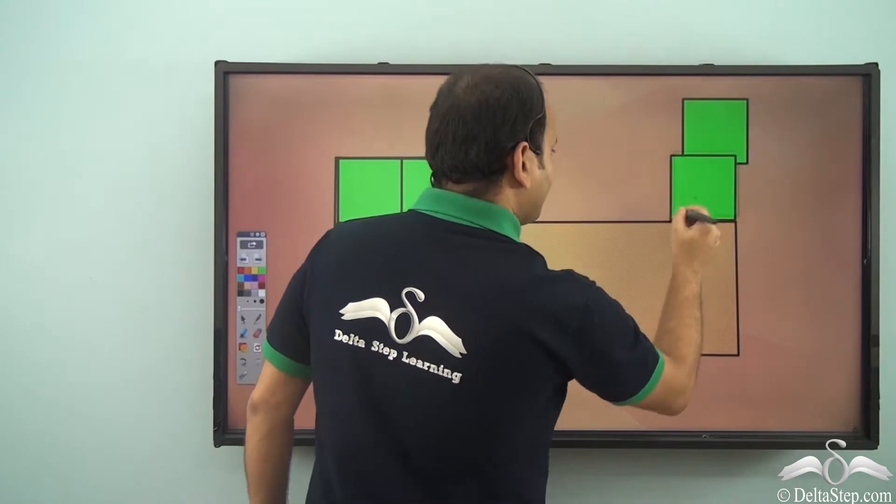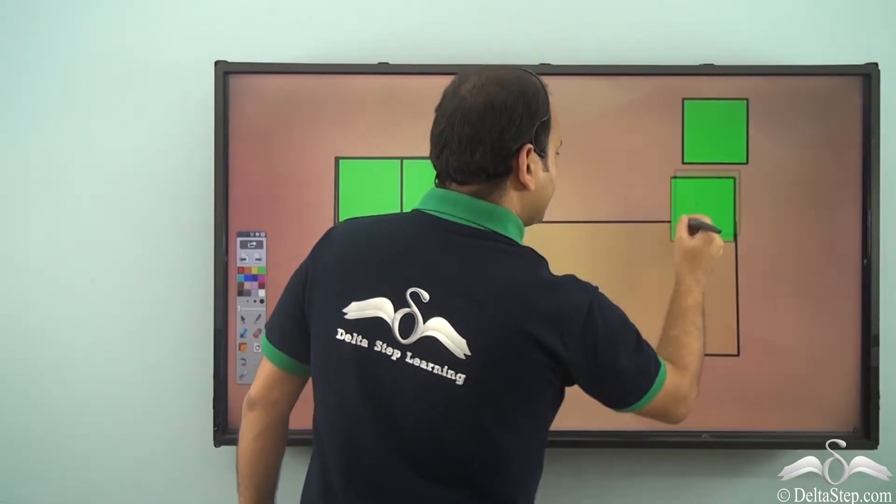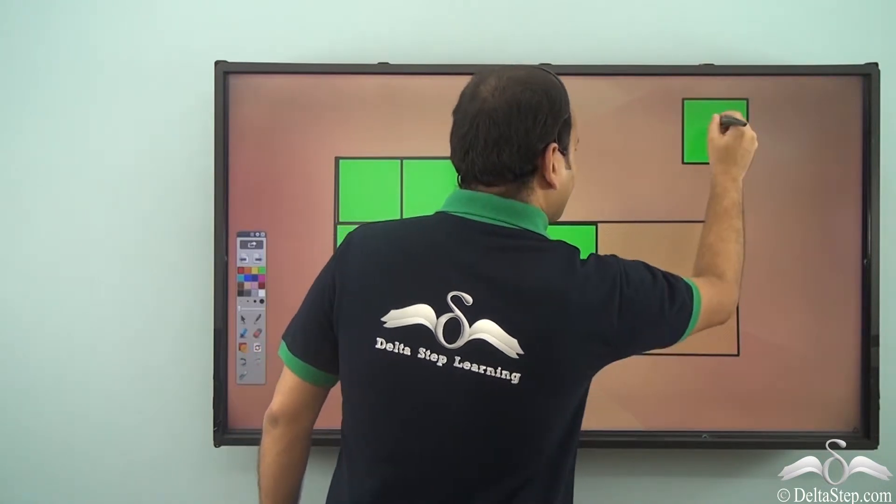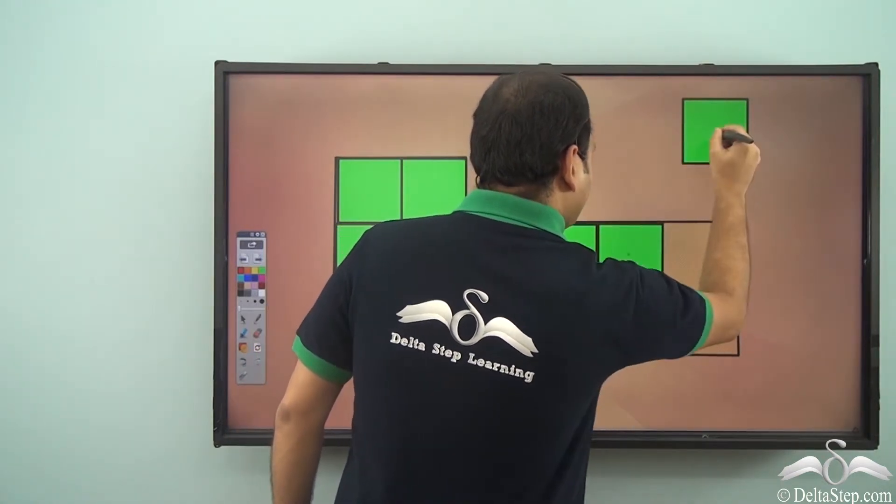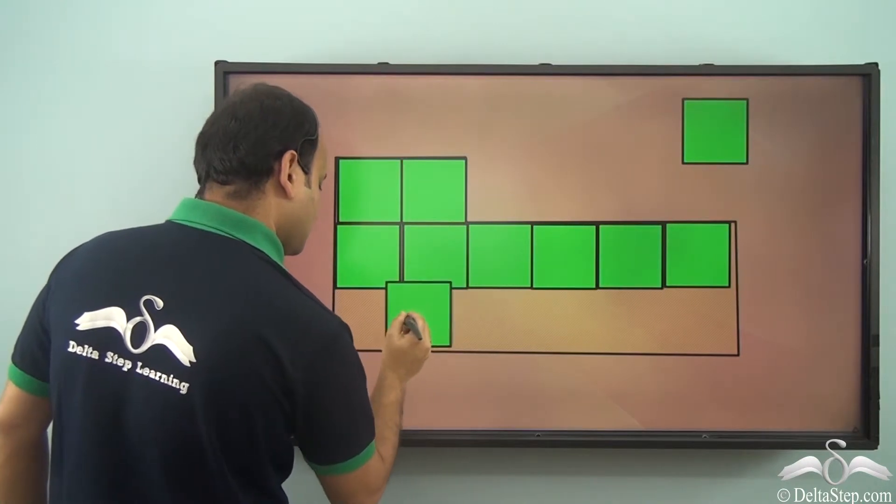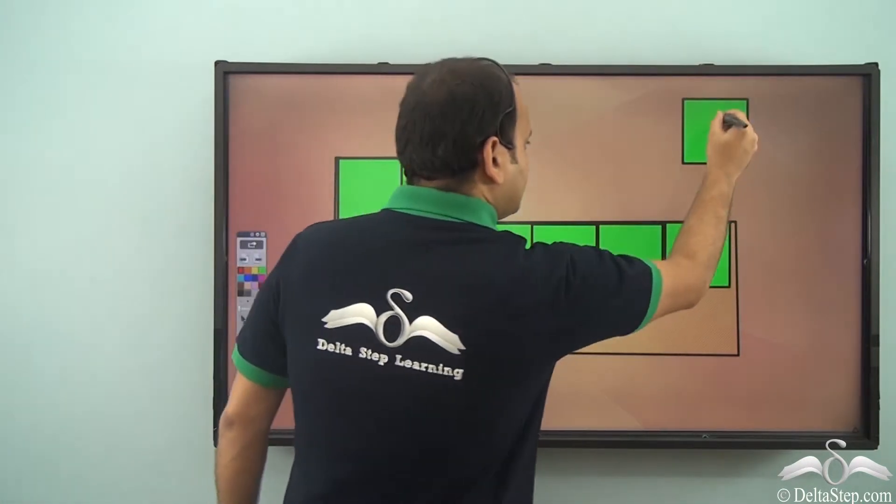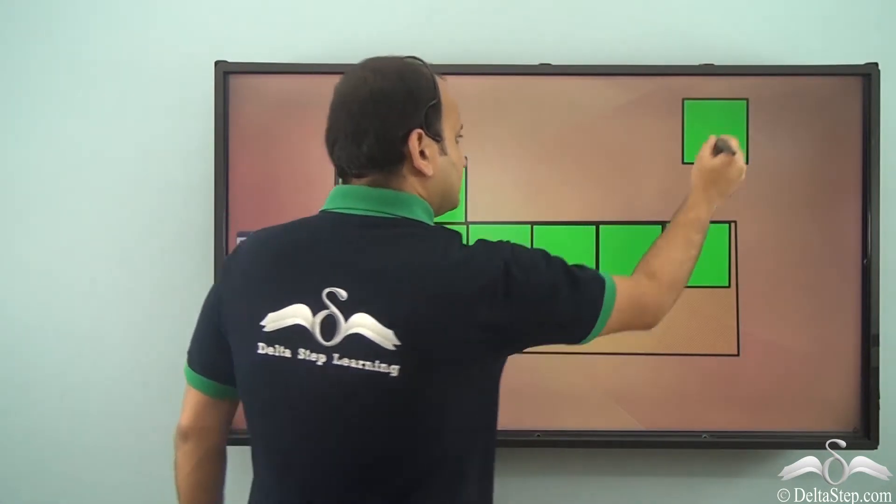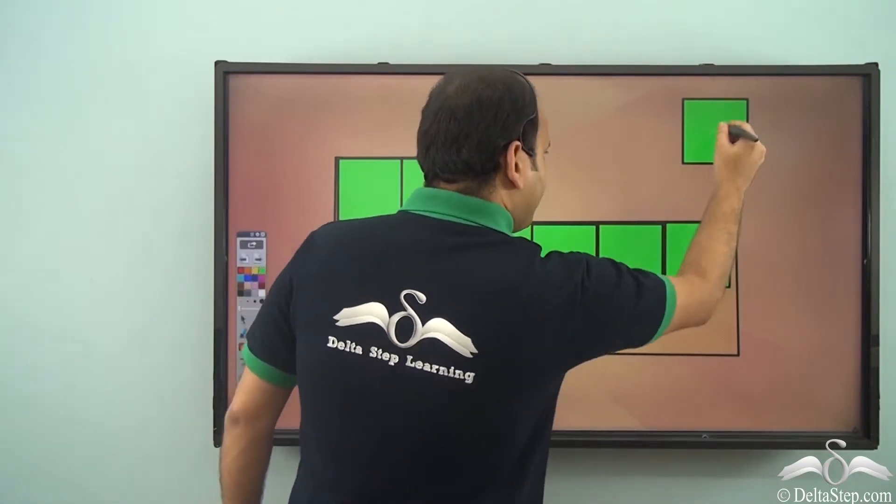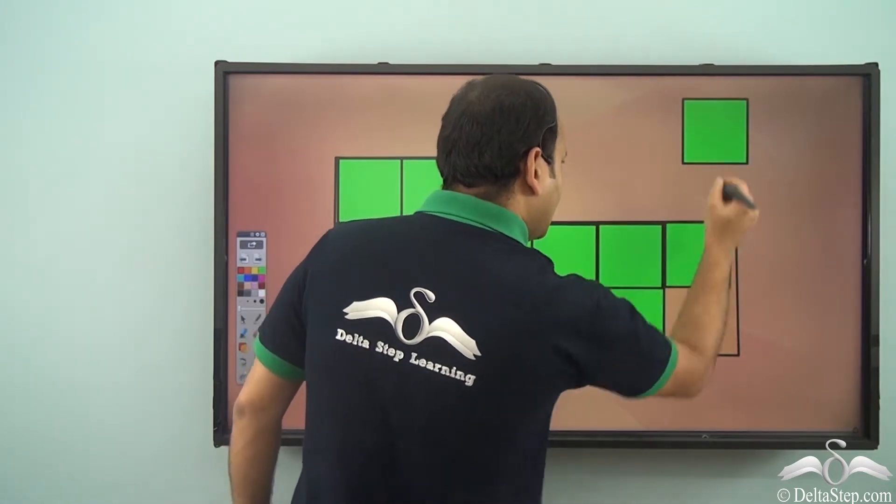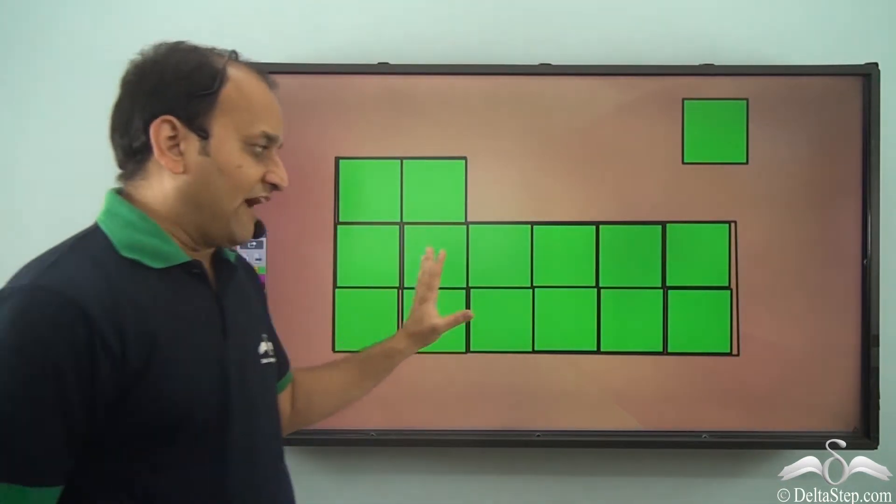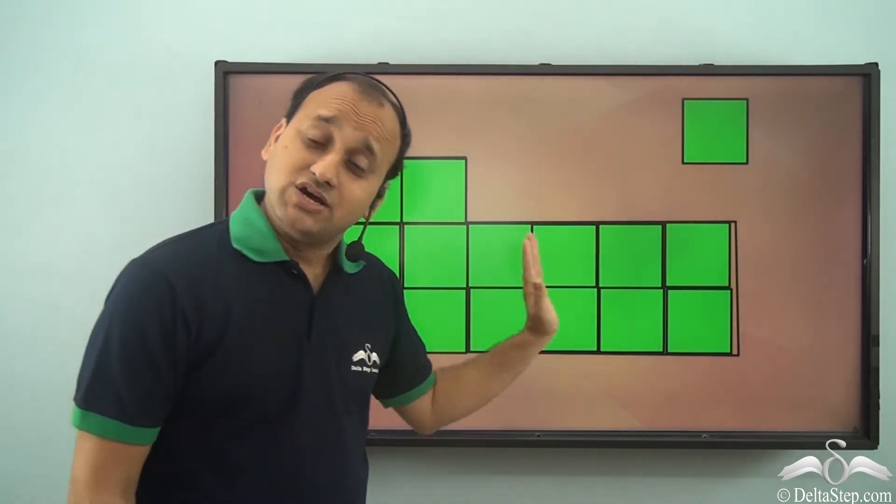So one and two of them here, three, four, five, six, seven, eight, nine, ten, eleven, twelve, thirteen, and fourteen. So we can find an approximate value of the area, that is fourteen square tiles.